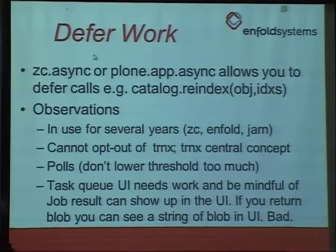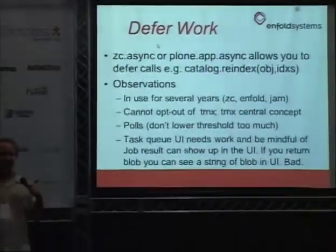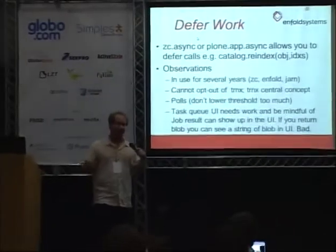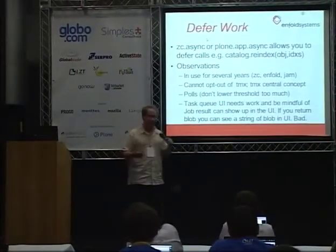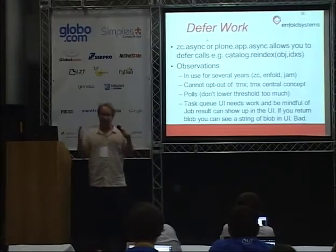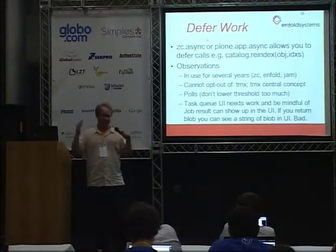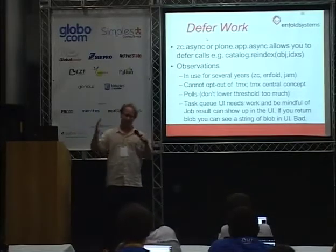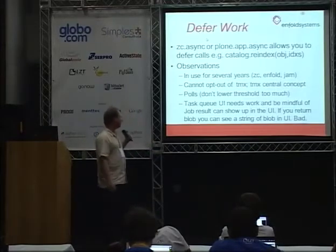Some problems with async: it polls. That's not a problem, but don't try to make it real-time by decreasing the polling to 0.001 — that's just not how the system works. You cannot opt out of transactions. If you don't want transactions, you can't use this. It's either all or nothing — if you're going to use it, you have to use transactions.